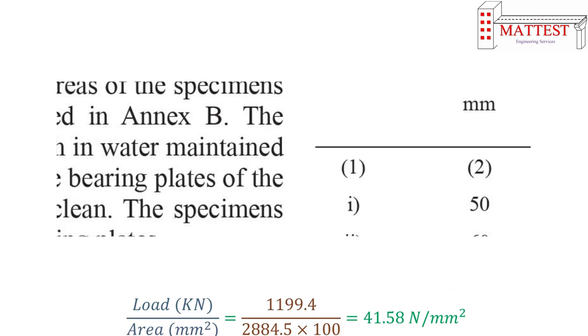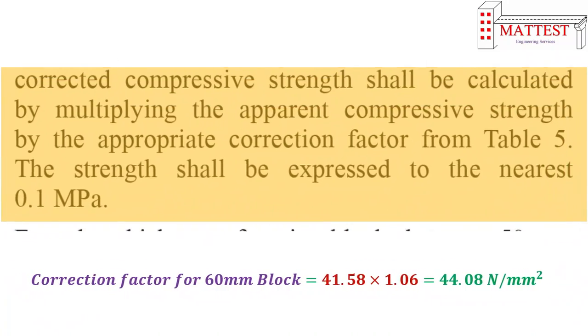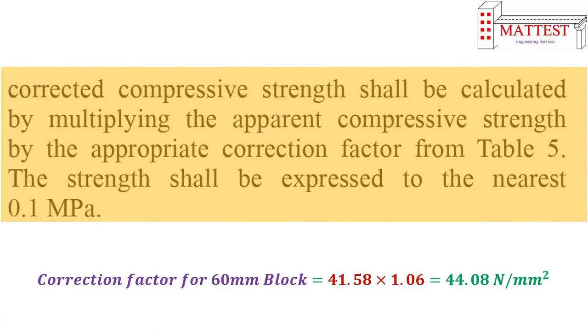The apparent compressive strength of an individual specimen shall be calculated by dividing the maximum load in Newtons by the plan area in mm squared. The corrected compressive strength shall be calculated by multiplying the apparent compressive strength by the appropriate correction factor from Table 5. The strength shall be expressed to the nearest 0.1 MPa.